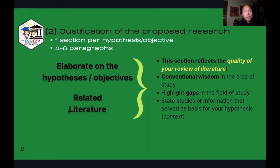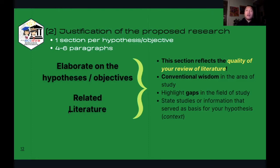Justify your objective and communicate the need — why what you're doing is important. The typical pieces of related literature that you provide here would be a restatement of conventional wisdom in the area. Then you follow it up by highlighting the gaps in the field of studies, the challenges, or what are the unanswered questions that you're trying to answer with your proposed research idea.